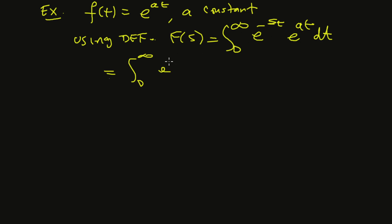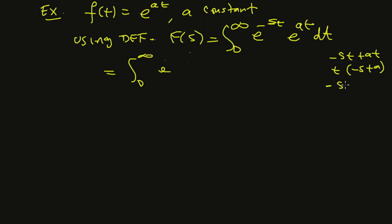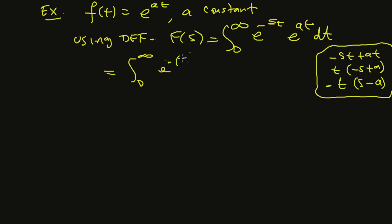Both are exponential so we can add the exponents: e to the negative st plus at. We can factor t out to get e to the t times negative s plus a, and then factoring the negative gives e to the negative t times s minus a. So the integral becomes the integral of e to the negative t(s minus a) dt.